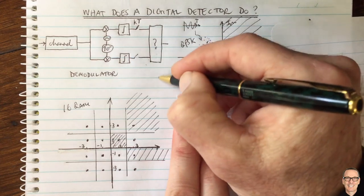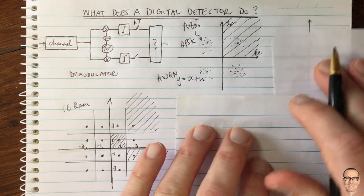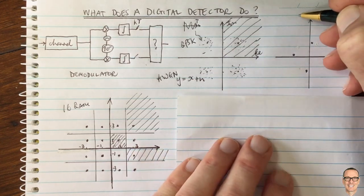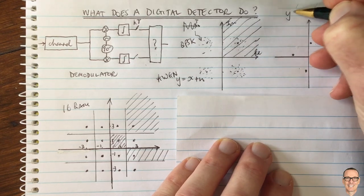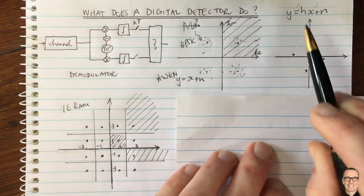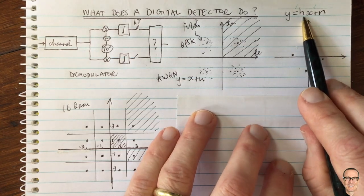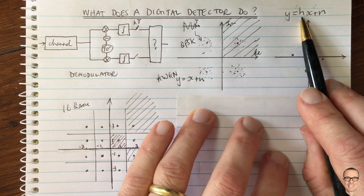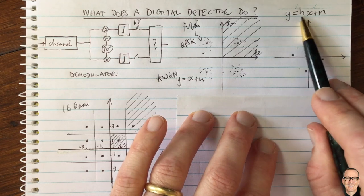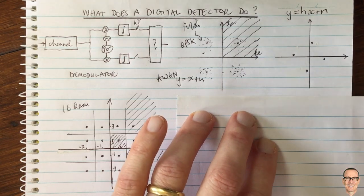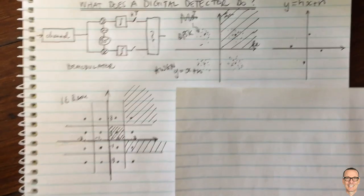These are for additive white Gaussian noise channels. What if the channel was more complicated? What if it was a fading channel? In a fading channel, the equation is Y equals H times X plus N. The symbol that's gone in has been multiplied by the channel gain H, which is something you don't know and have to measure at the receiver. It multiplies by a phase and an amplitude.